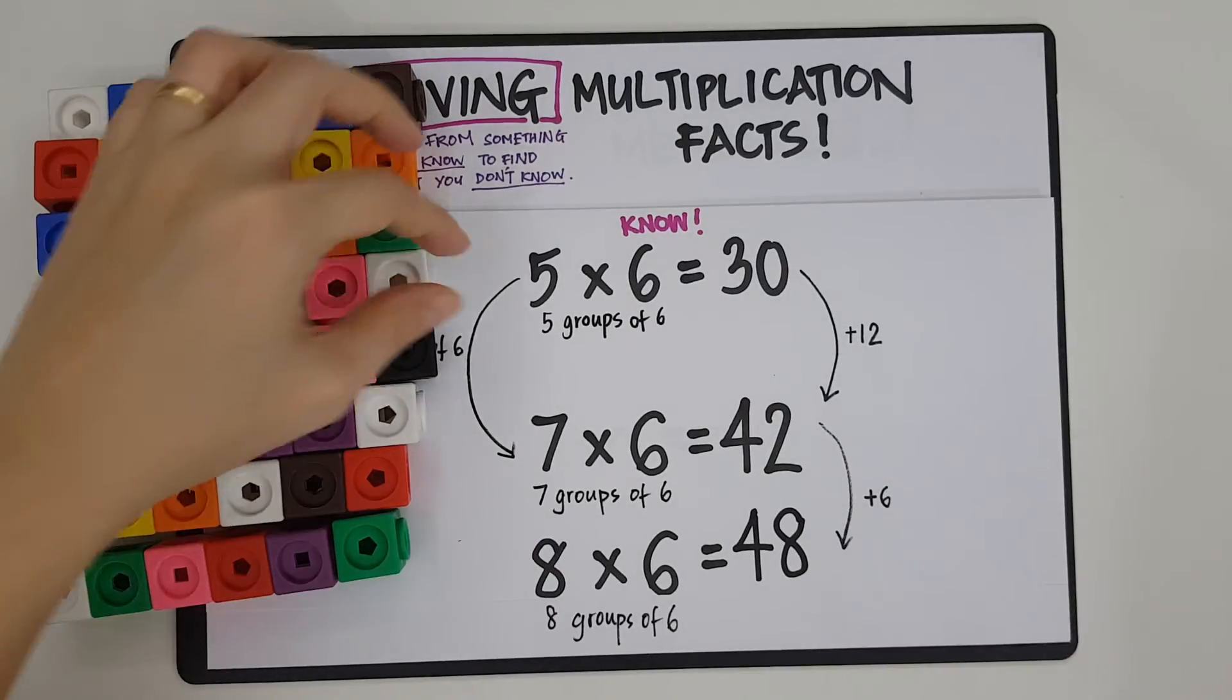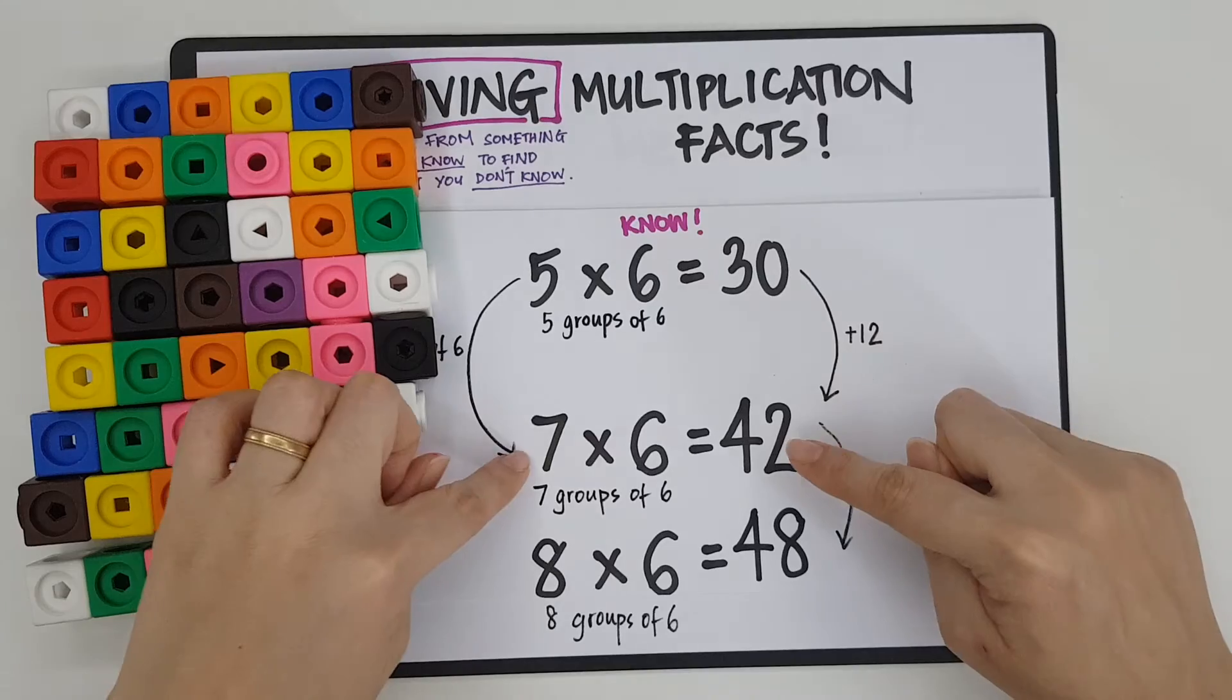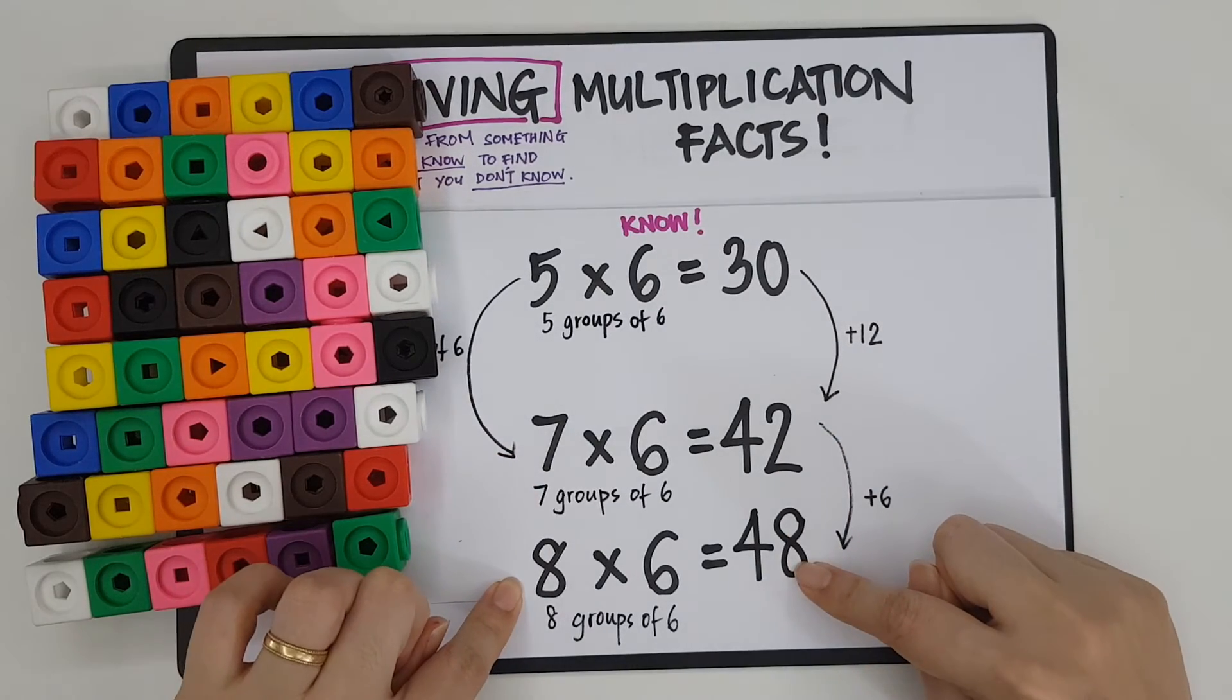Okay? So see, just from one multiplication fact that I knew, I was able to derive 2 more. Okay?